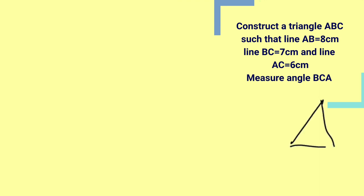This is a triangle, A, B, and C. From the question we can see that line AB is equal to 8cm, so this side should be 8cm. Line BC is 7cm.